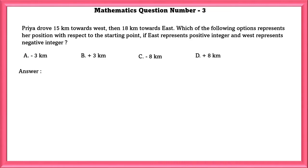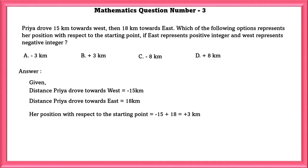Mathematics Question Number 3: Priya drove 15 km towards west, then 18 km towards east. Which of the following options represents her position with respect to the starting point, if east represents positive integer and west represents negative integer? Given distance Priya drove towards the west is minus 15 km, distance Priya drove to the east is equal to 18 km. Her position with respect to the starting point is minus 15 plus 18, which is equal to plus 3 km.